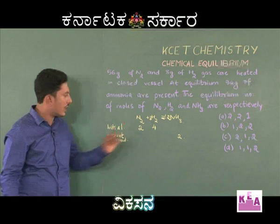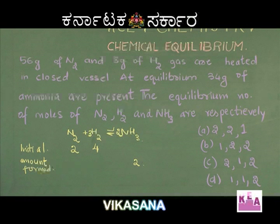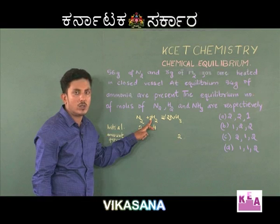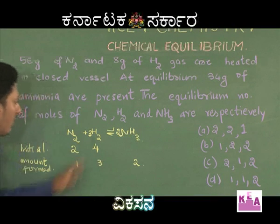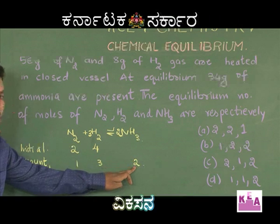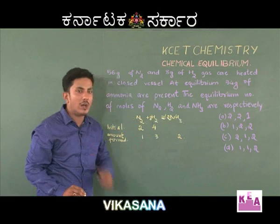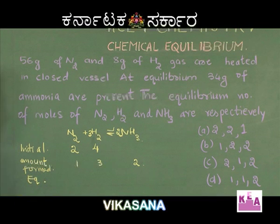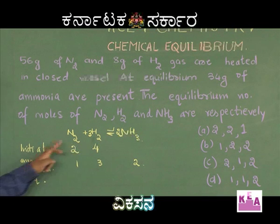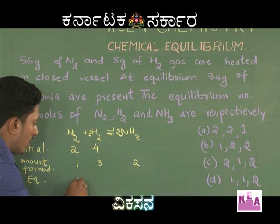Students, this equation clearly indicates that if 2 moles of ammonia is to be formed, 1 mole of nitrogen should react with 3 moles of hydrogen. At equilibrium, the initial number of moles of nitrogen was 2, and 1 mole reacted, so 1 mole remains.